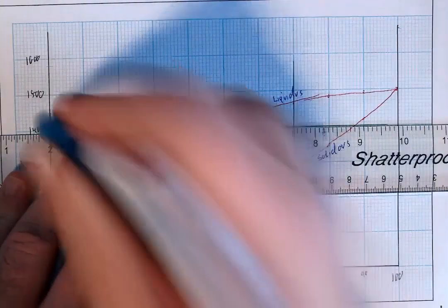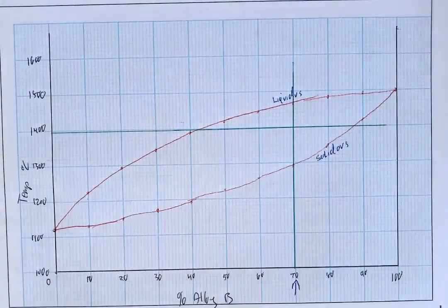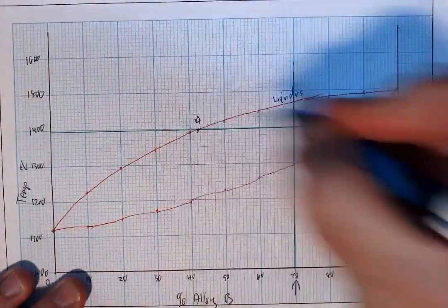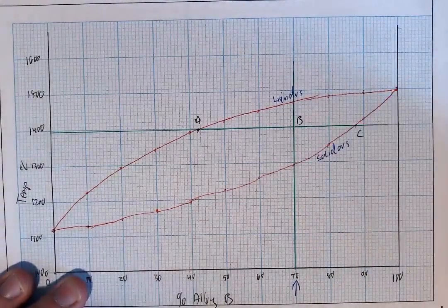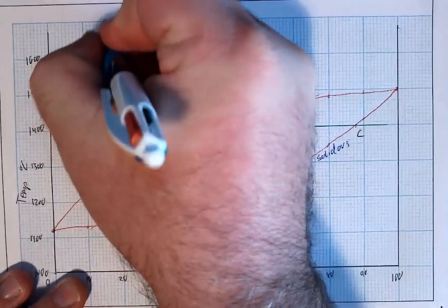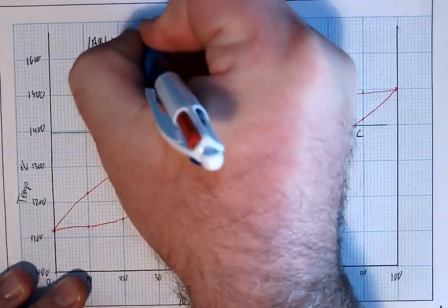So what you have here is you have a proportion of solid and a proportion of liquid. Now I'm going to label these three points. This point here is point A, this point here is point B, and this point here is point C. And what we are looking for is the ratio of AB to BC.